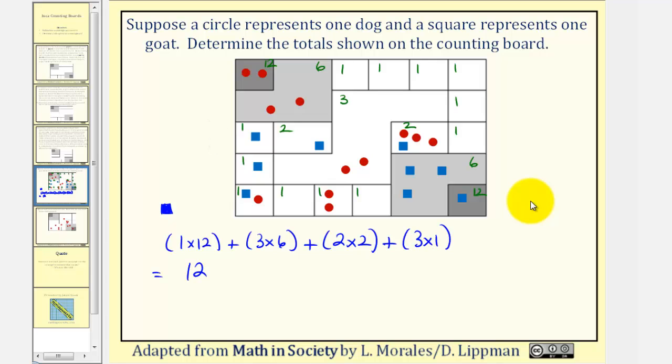So, we have a total of twelve, plus eighteen, plus four, plus three. So, we have thirty-seven. So, there's thirty-seven total goats. Okay, I hope you found this helpful.